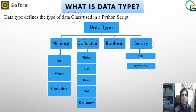In numeric type, we have integer, float, and complex. For collection type, we have string, list, tuple, set, and dictionary. For boolean, we will discuss that too, and binary type includes bytes and byte array.